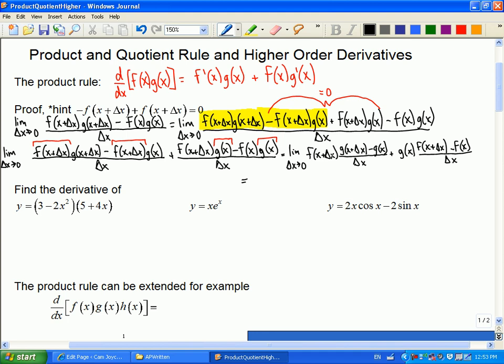At this point hopefully you recognize what you're looking at. After that clever addition and separating the two fractions, the first piece as delta x goes to zero is just going to become f(x). Do you recognize this here? That's the derivative of g(x), so it would be g'(x) plus g(x) times the derivative of f. So each one gets a turn as derivative.